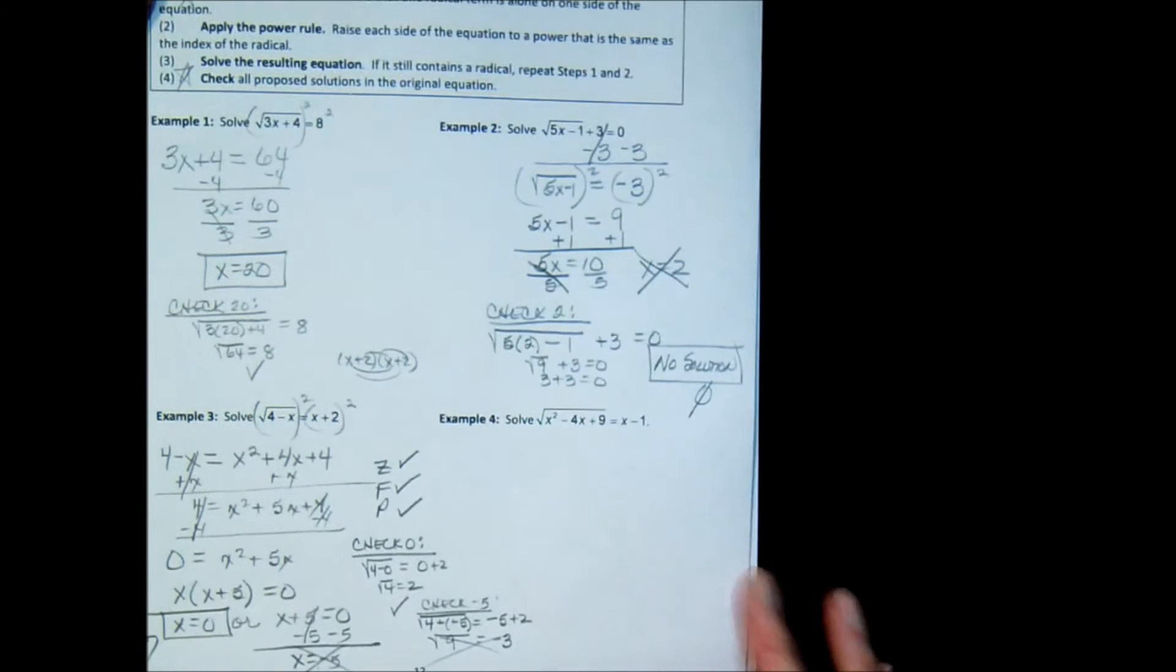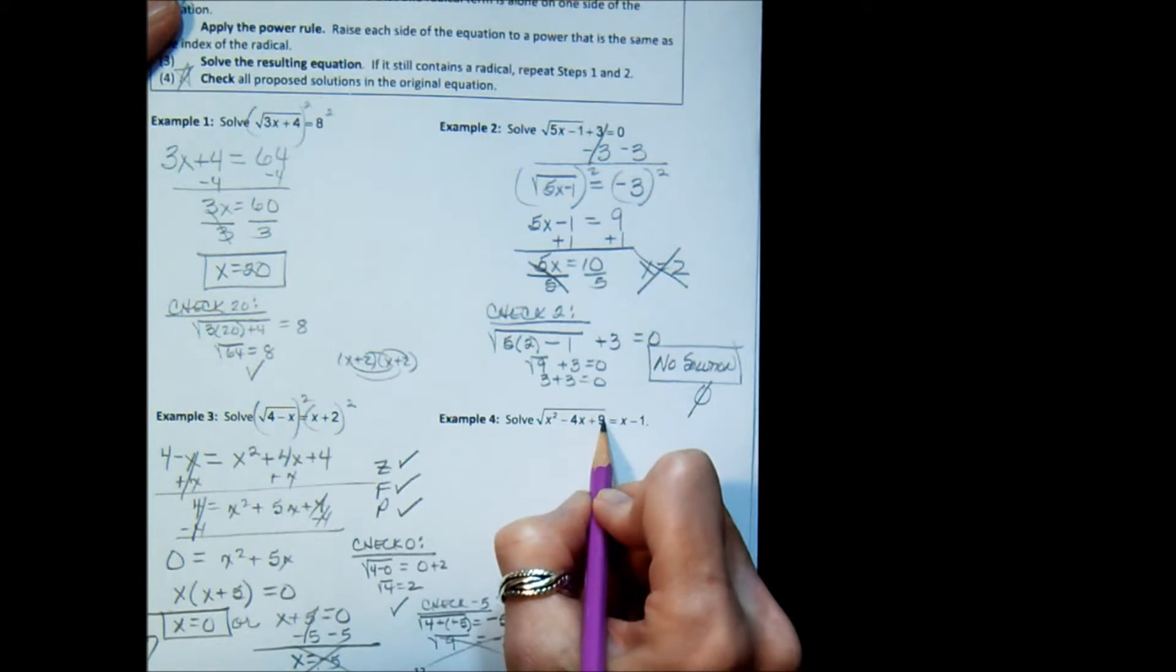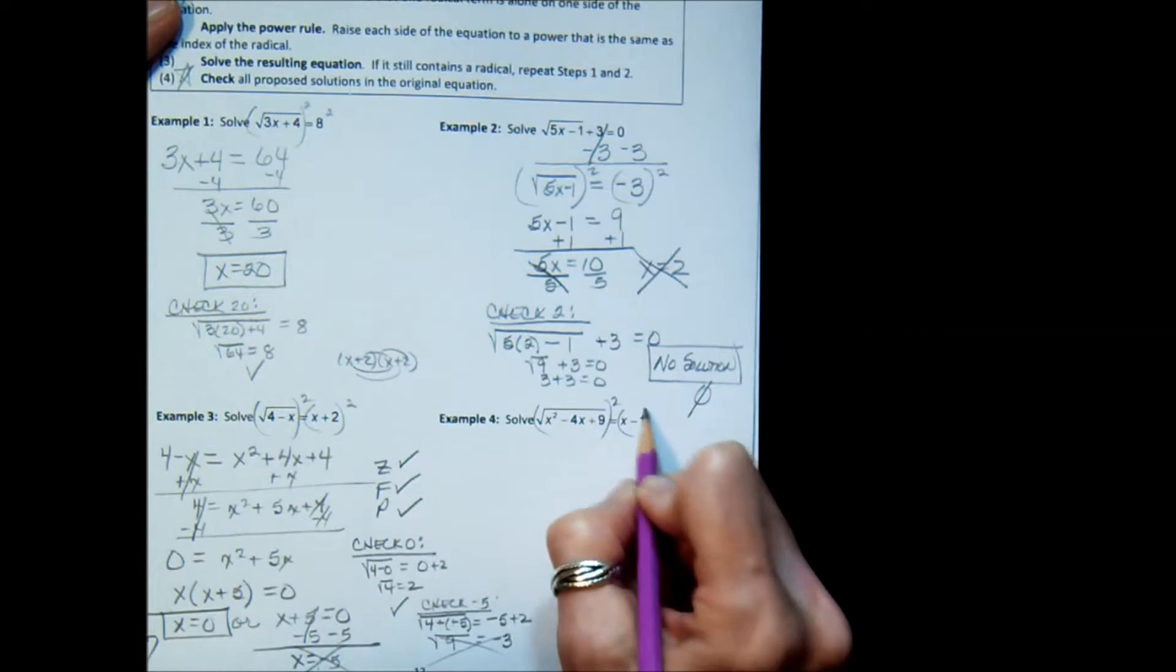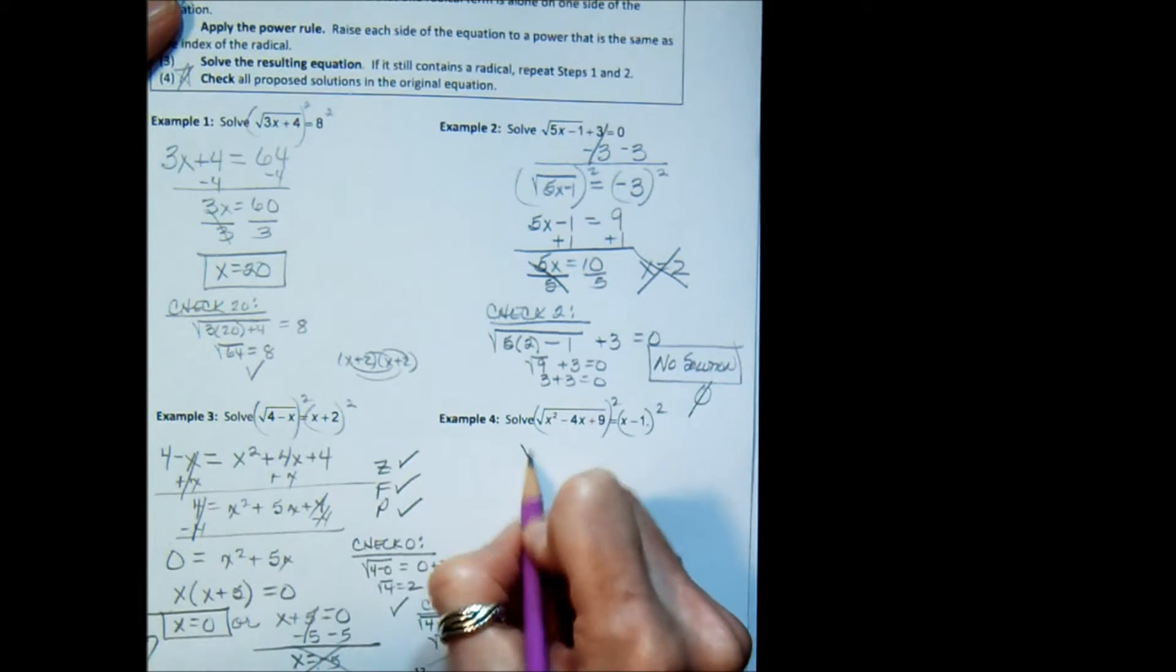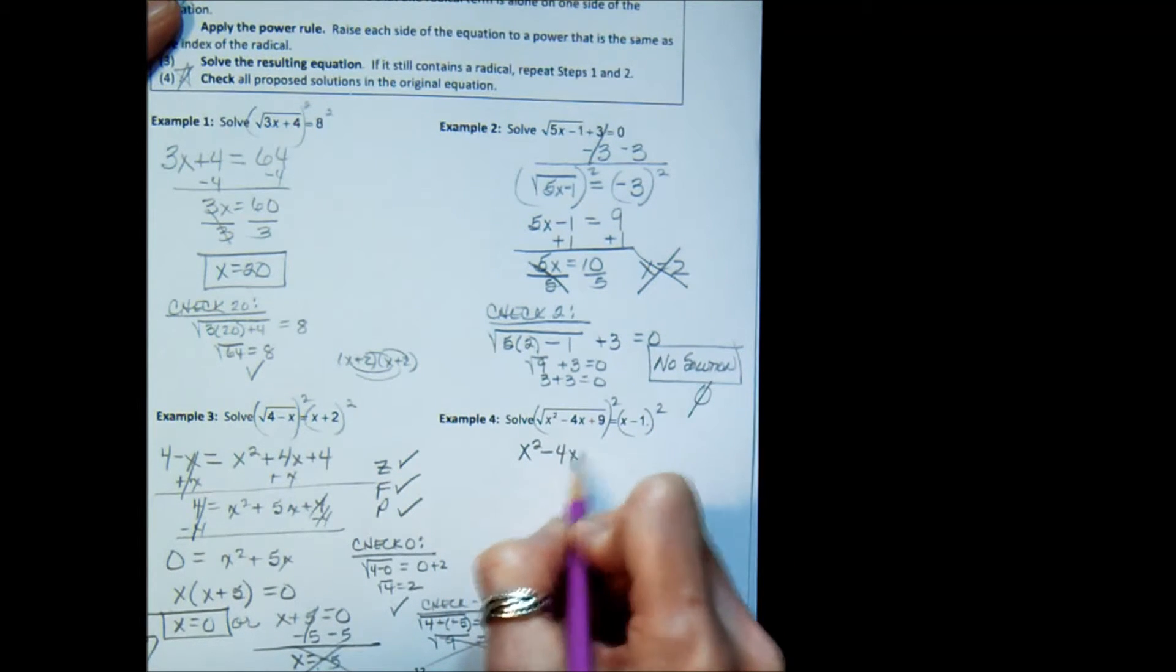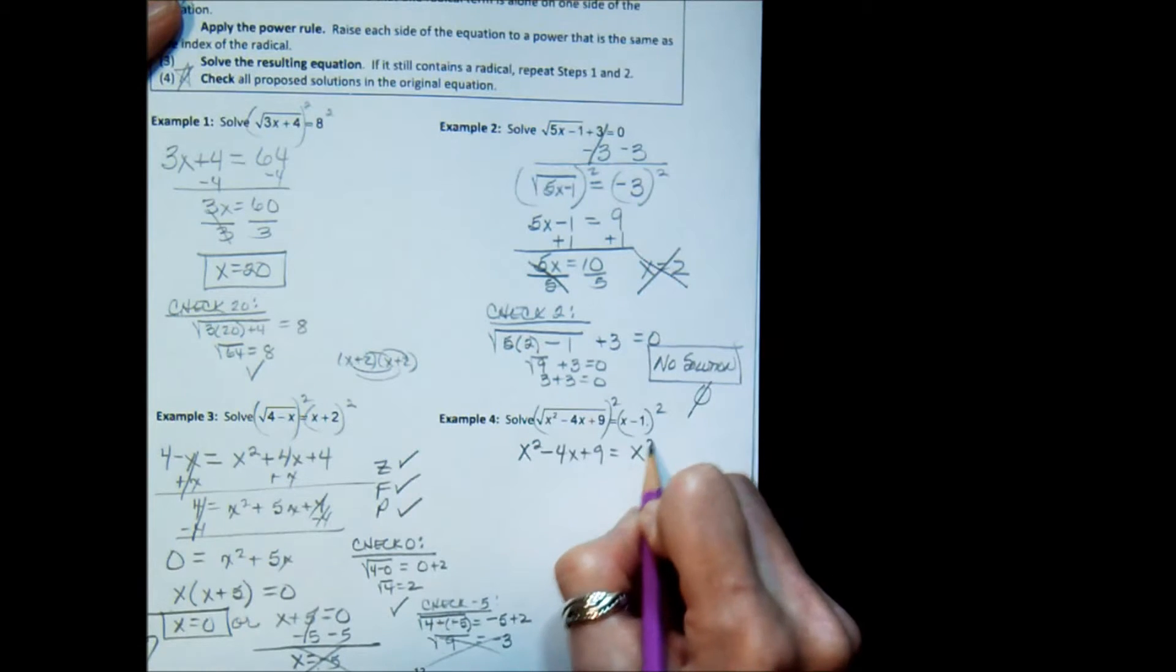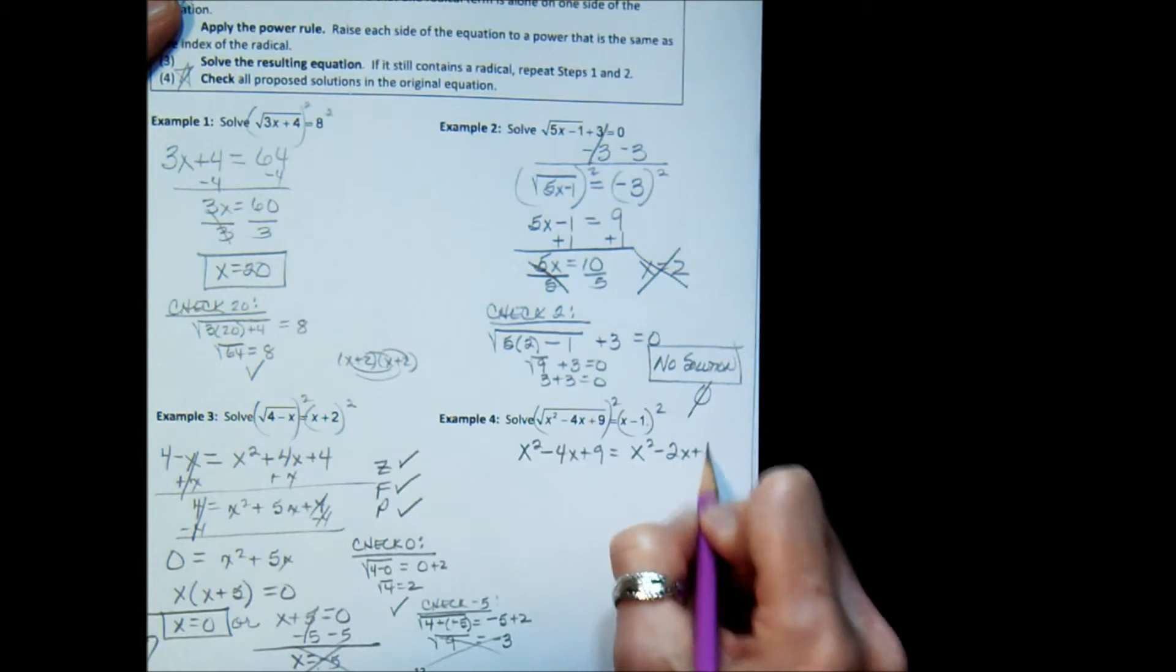Let's try another one. The radical is isolated. It's a square root, so I'm going to square both sides. This side, I'm left with the radicand. On this side, if you foil that out, x minus 1 times x minus 1, you get x squared minus 2x plus 1.